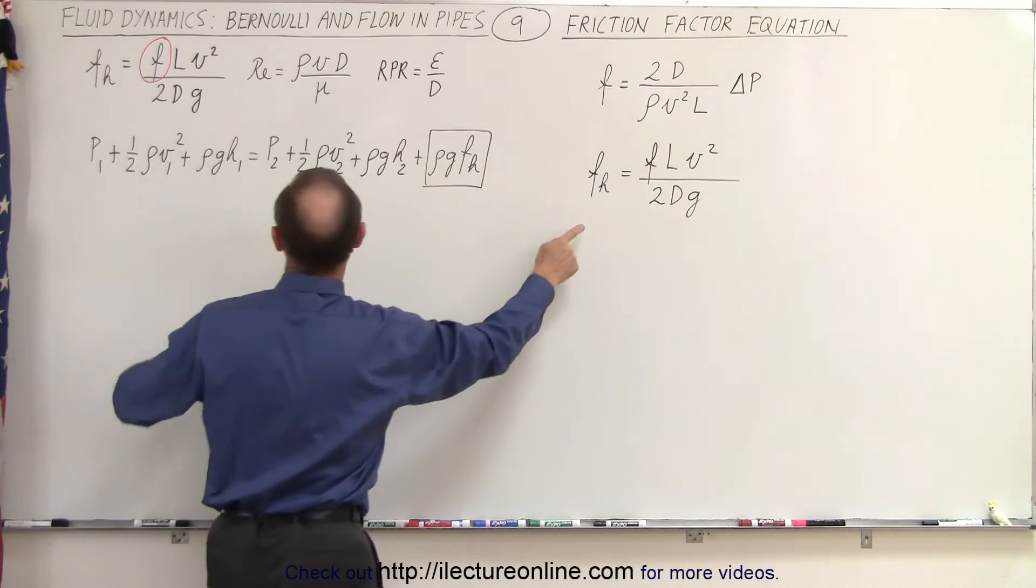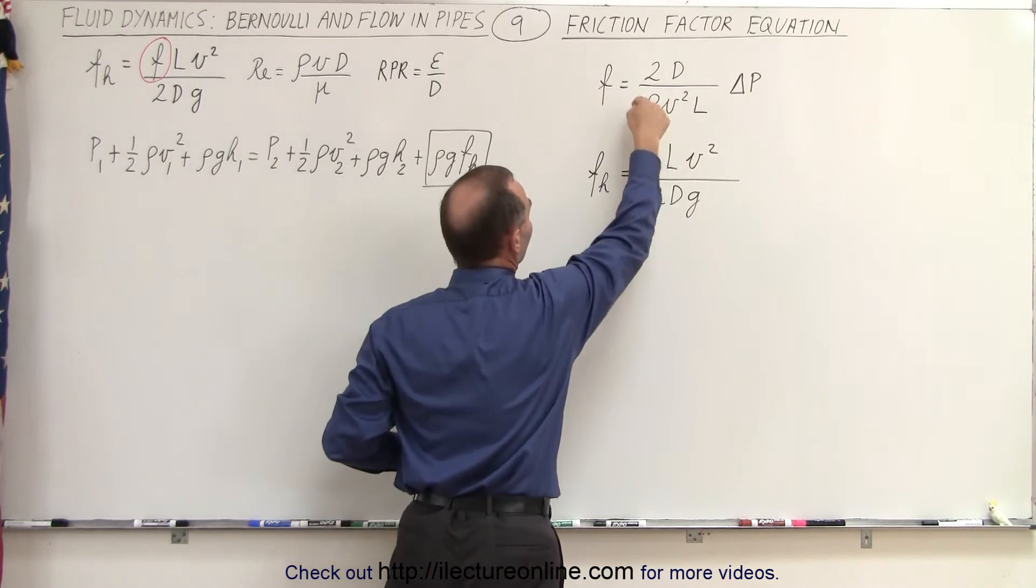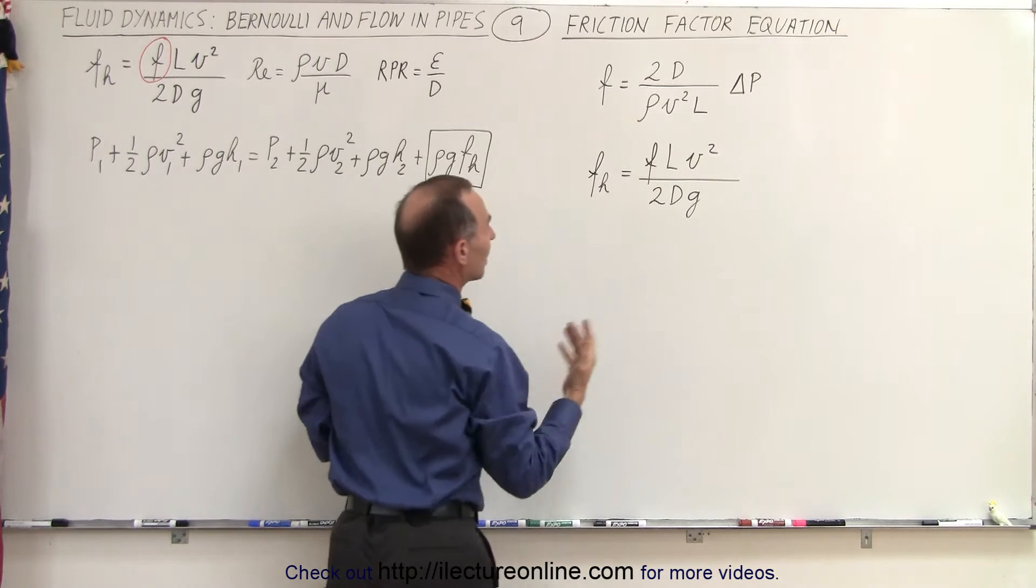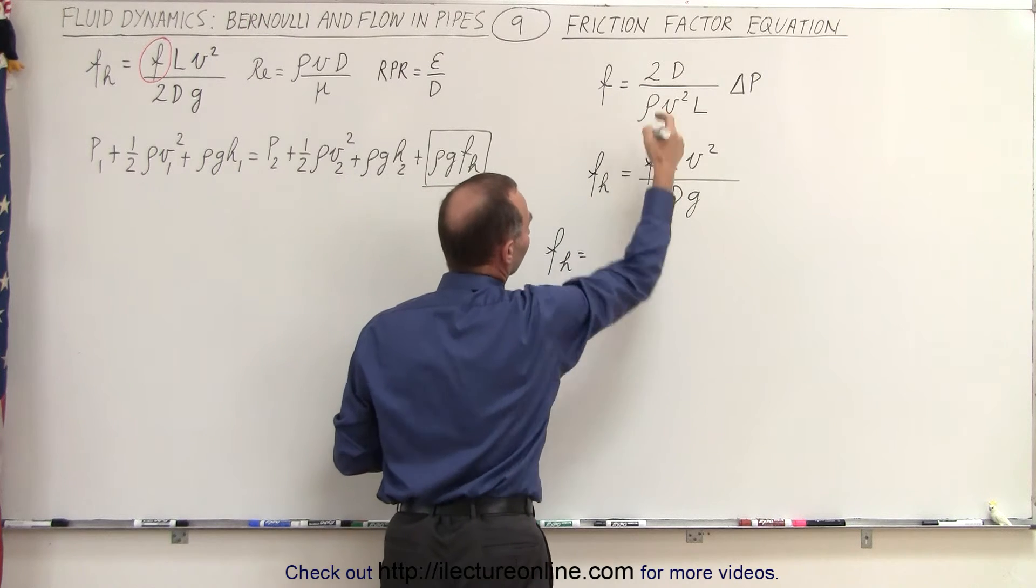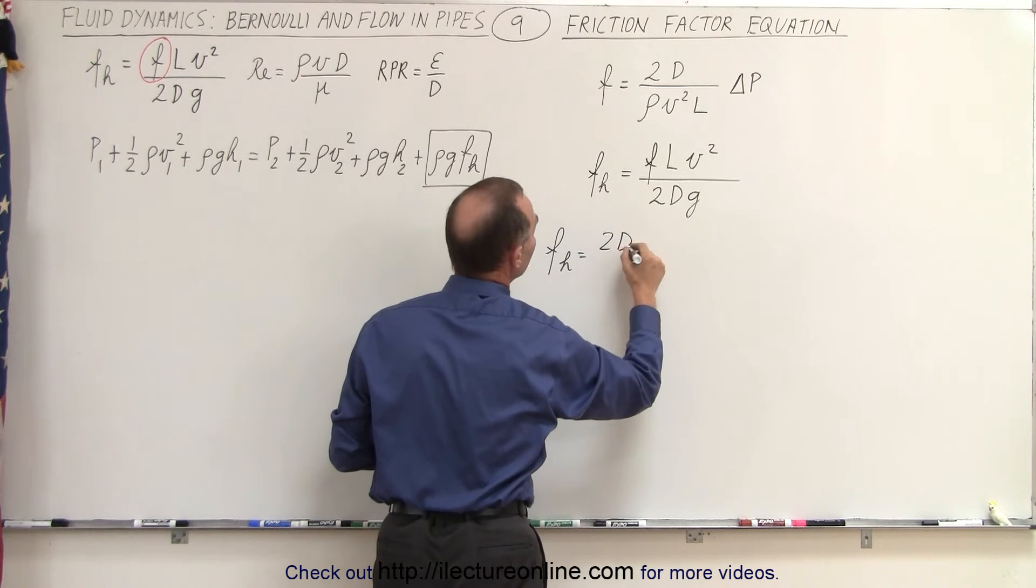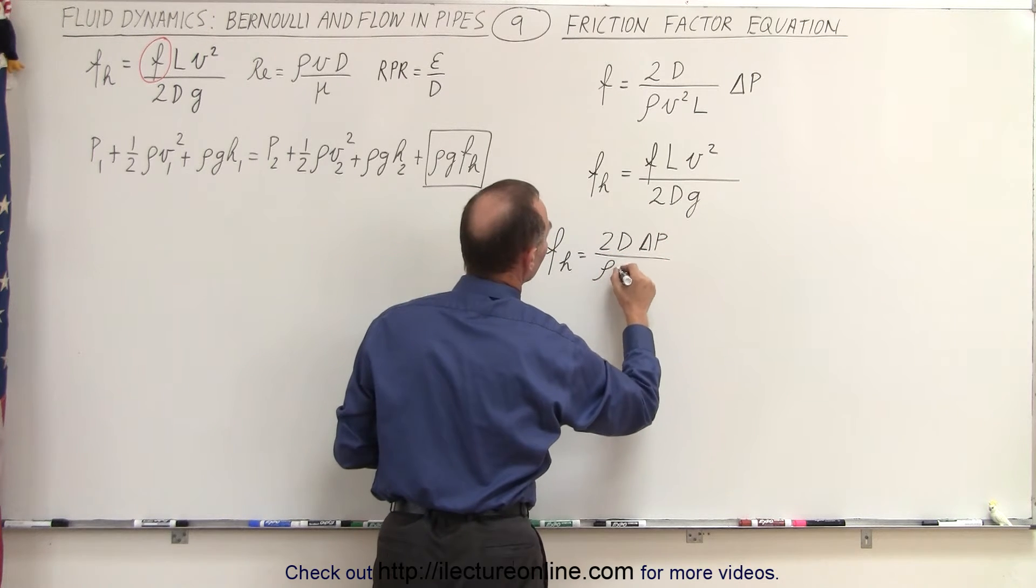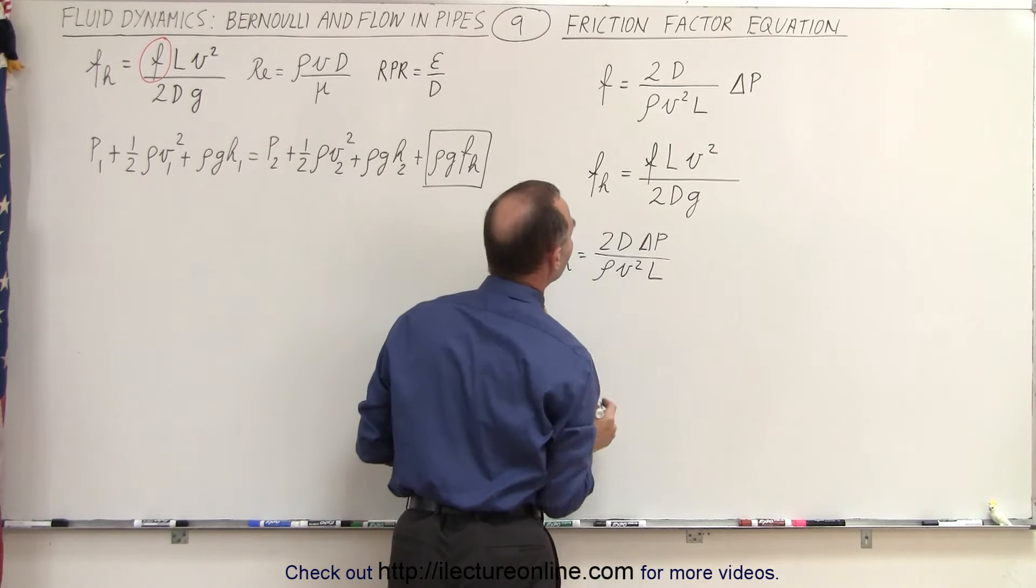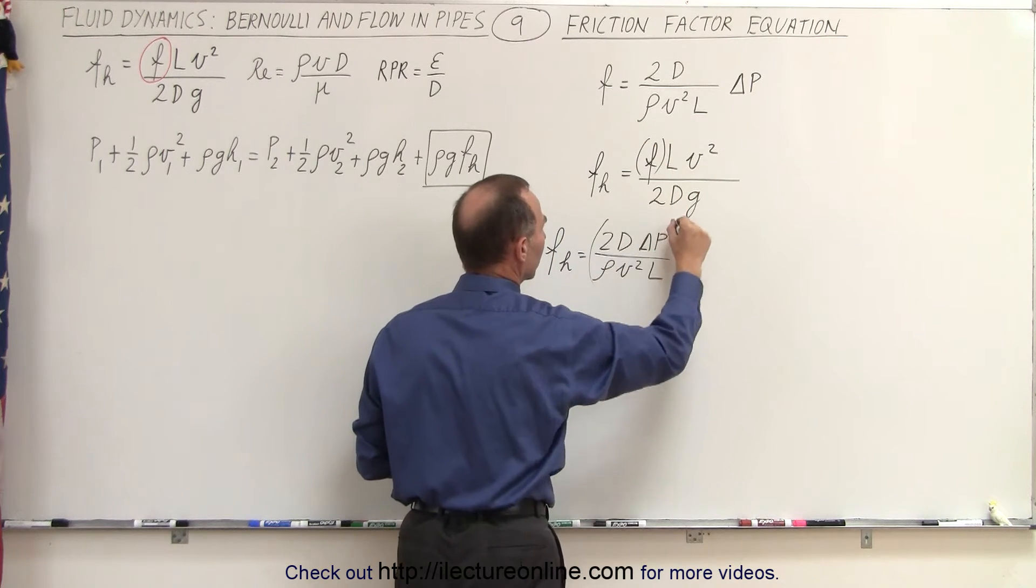And then if we go back and get the equation for the frictional head loss, then we're going to take the friction factor and substitute it in here to see what we end up with. So this becomes the frictional head loss is equal to F, which is equal to this, so that would be 2D times the change in the pressure divided by the density times velocity squared times L. So that's equal to this quantity right here that goes in right here.